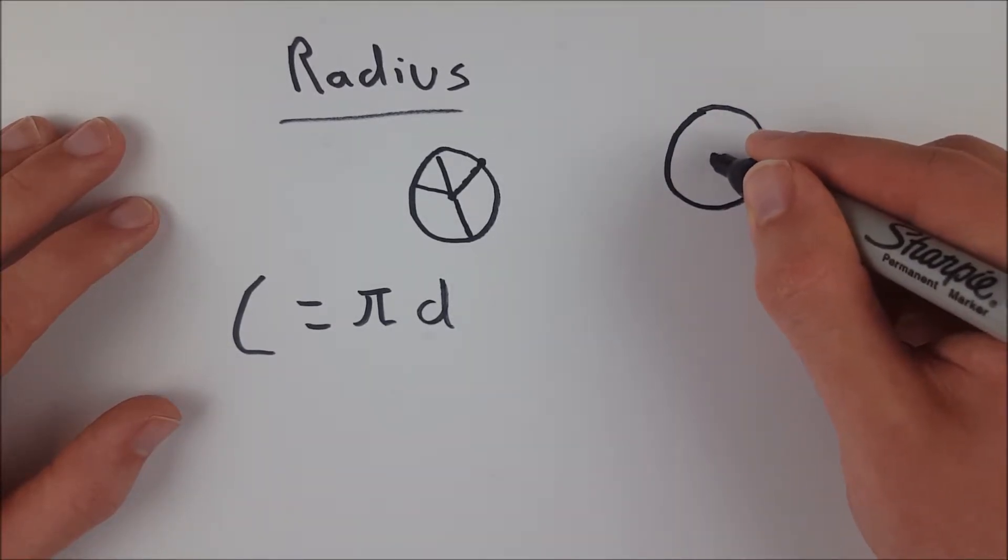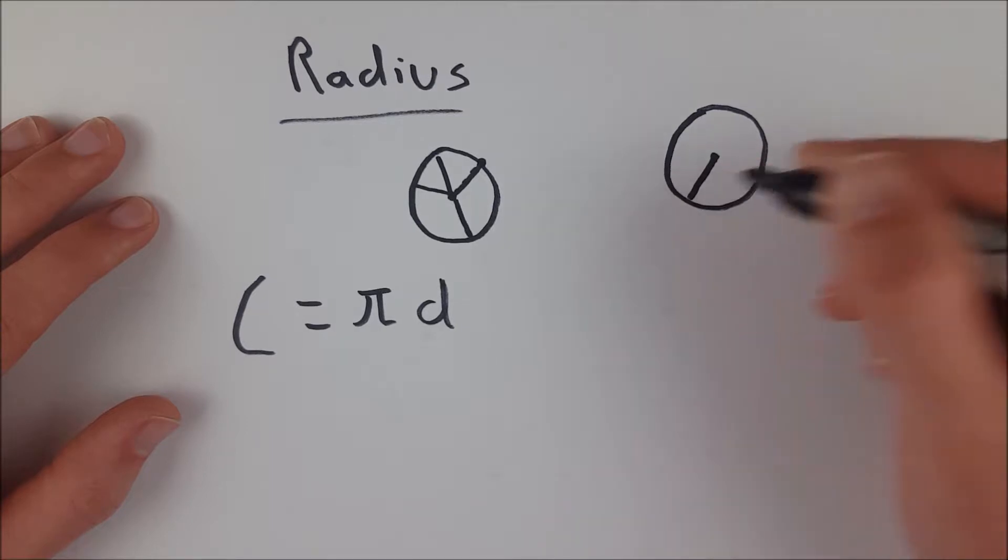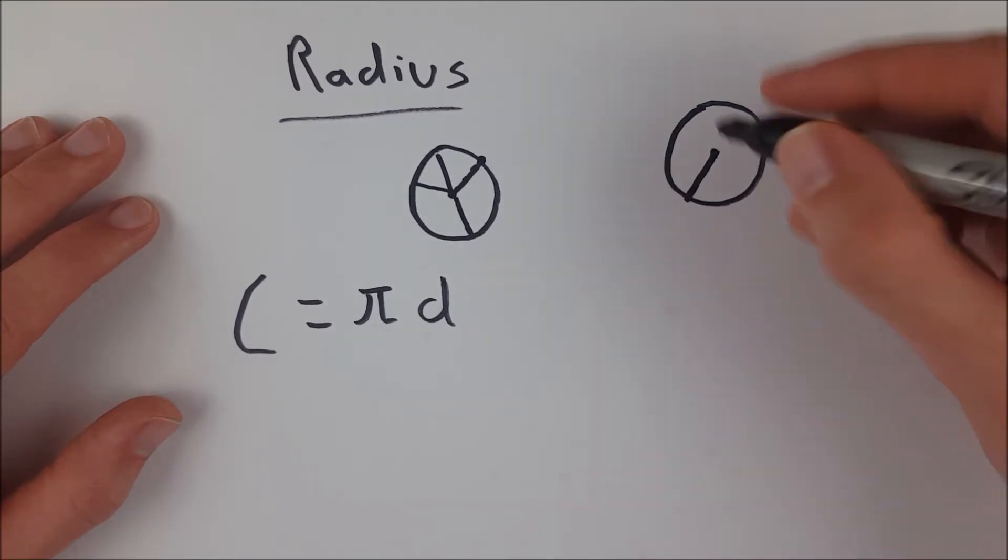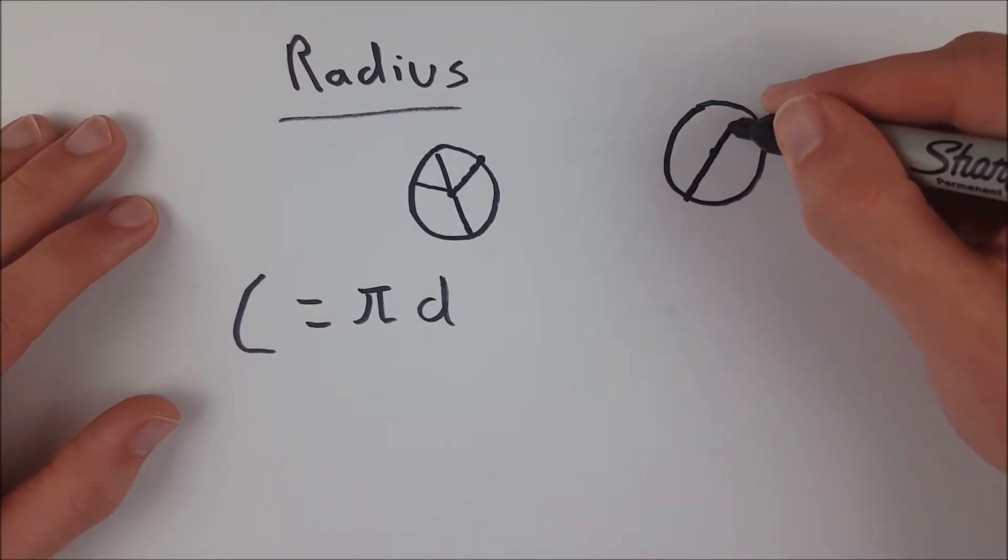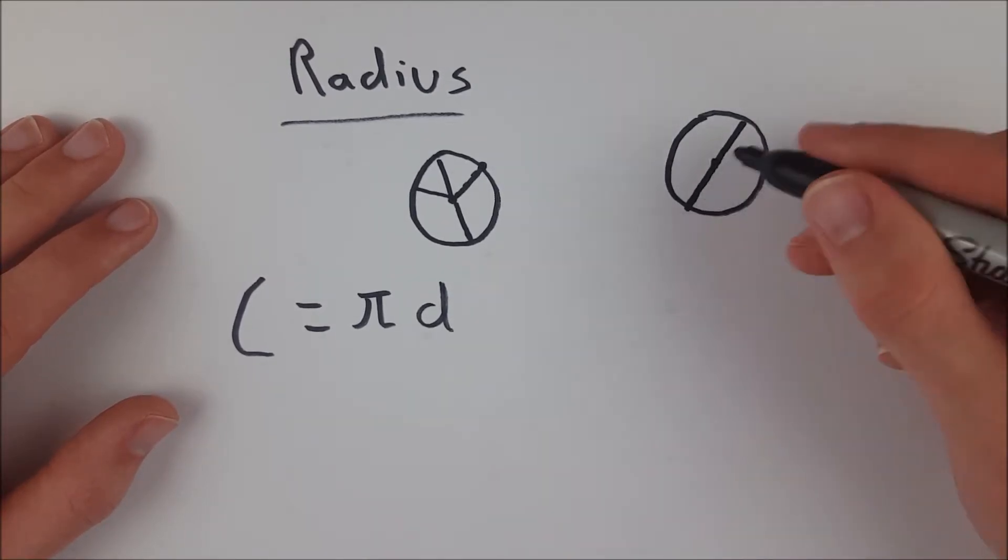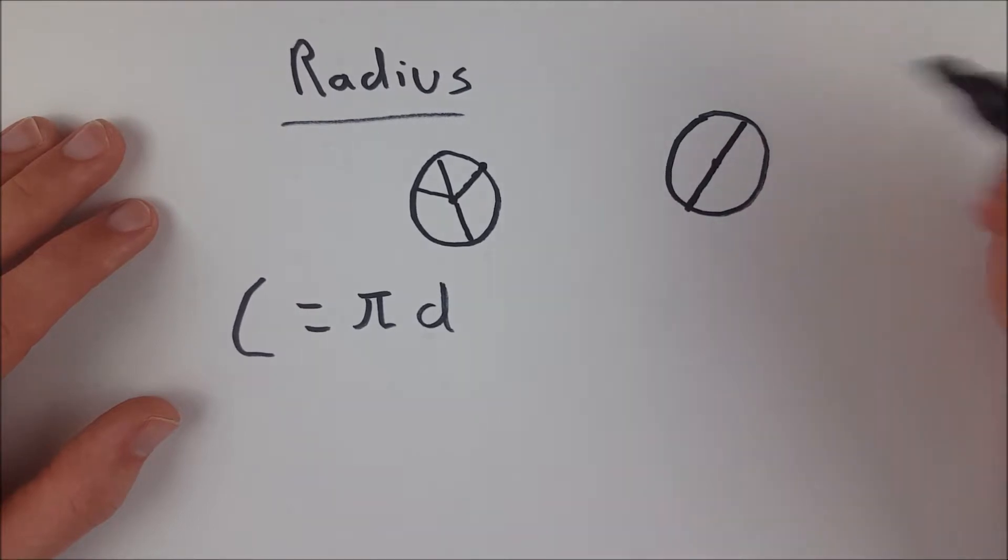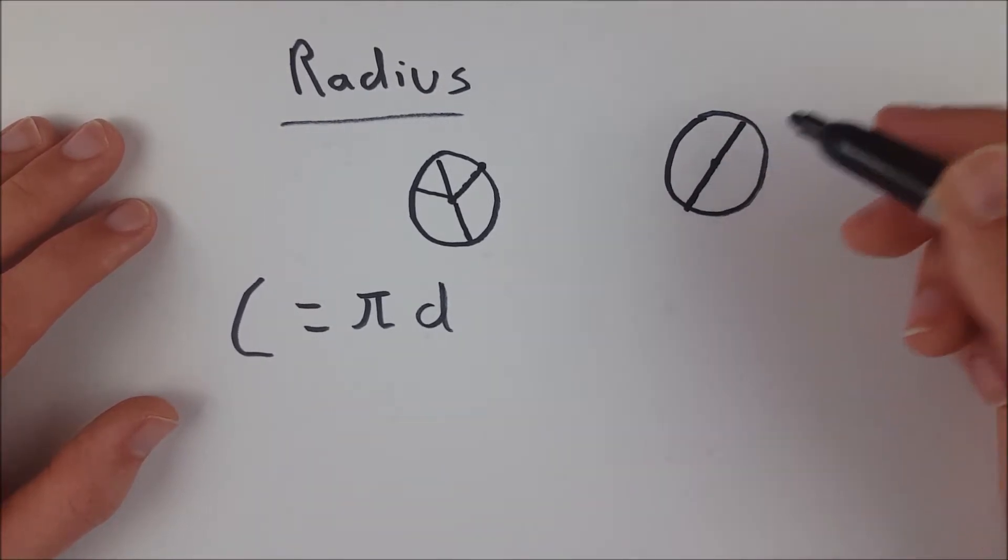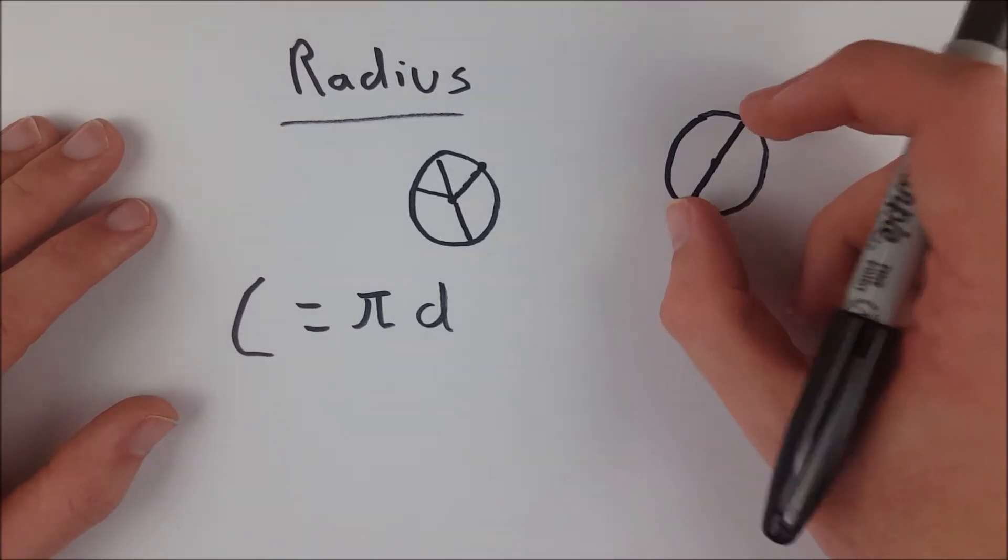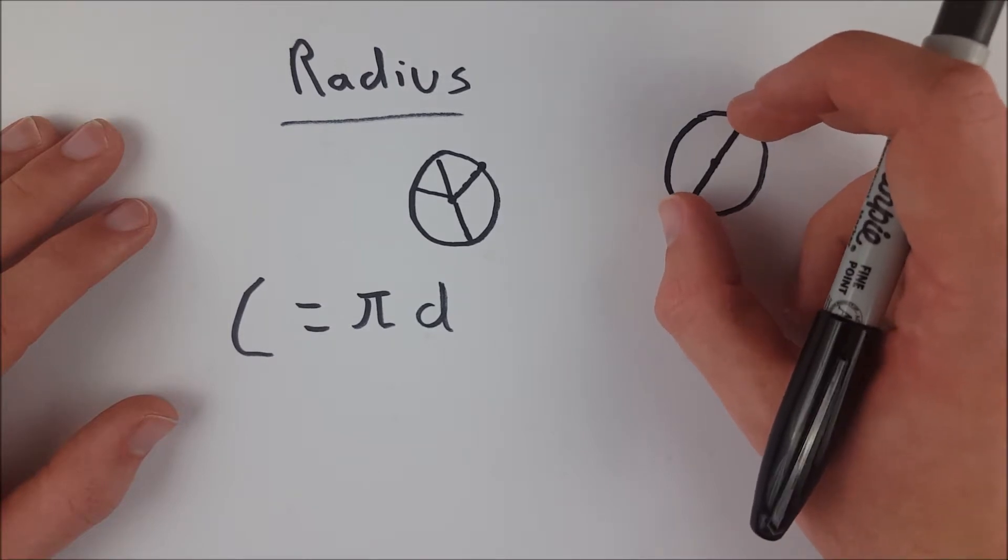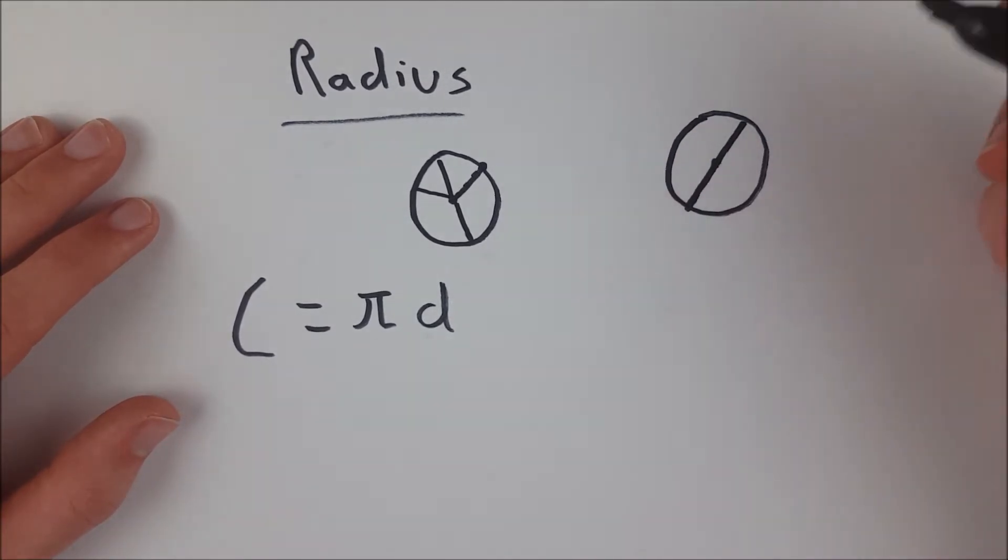Here's a radius from the center to a point on the circle. And we could also draw another radius right here that forms a straight line with that radius so that we've got a 180 degree angle right there. And this would be a diameter of the circle because it's a line segment with endpoints on the circle that passes through the center.